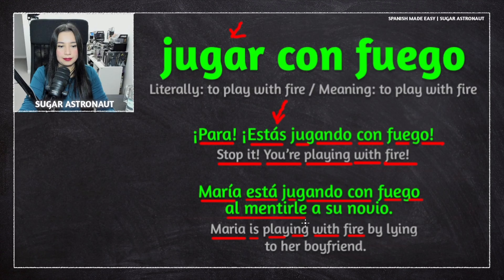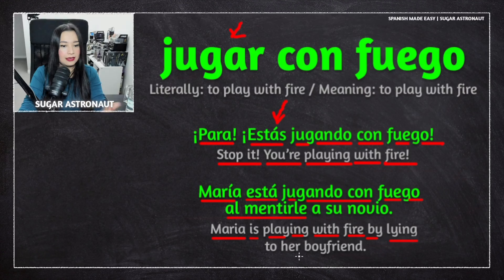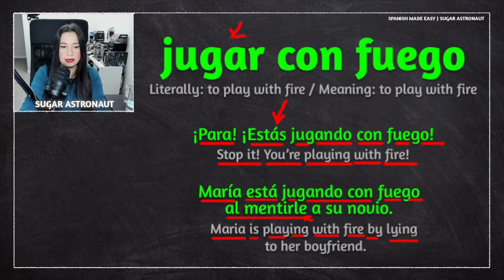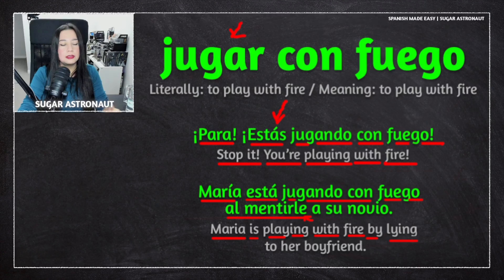Al mentirle — by lying. Mentirle. Mentirle a él. You're adding the pronoun le because you're talking about the boyfriend. We do that a lot in Spanish — we add pronouns to verbs very often. If you just say al mentir without le, it doesn't make sense. You need le because you're lying to your boyfriend.